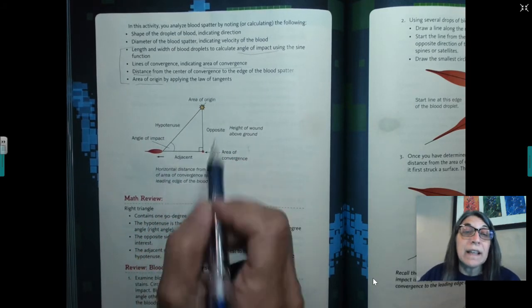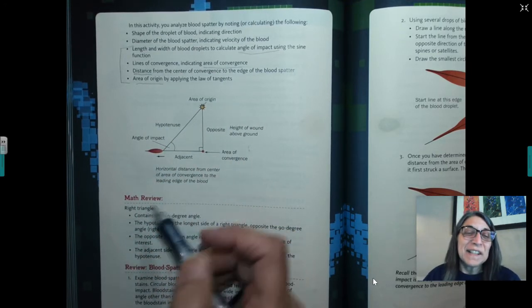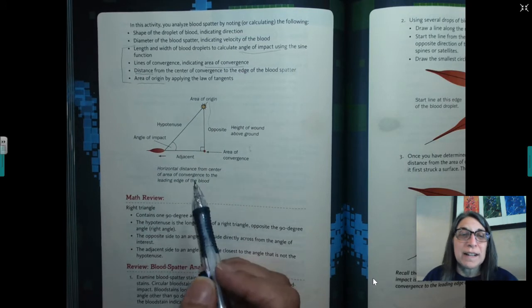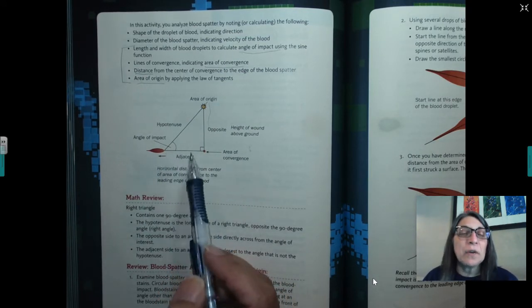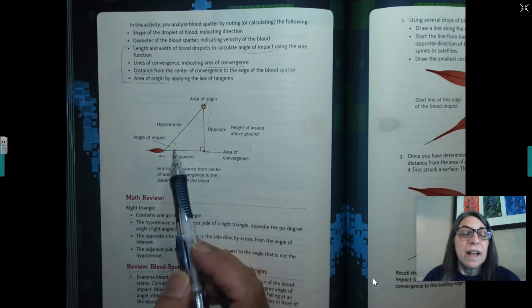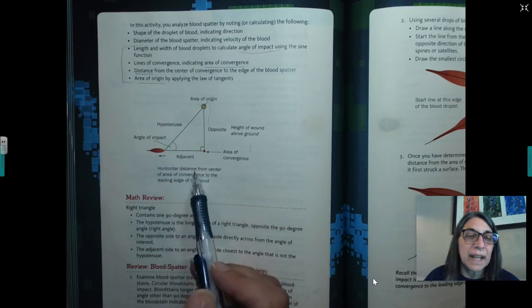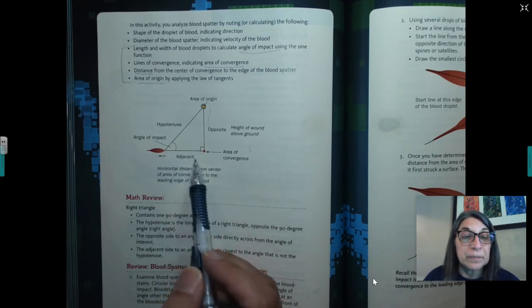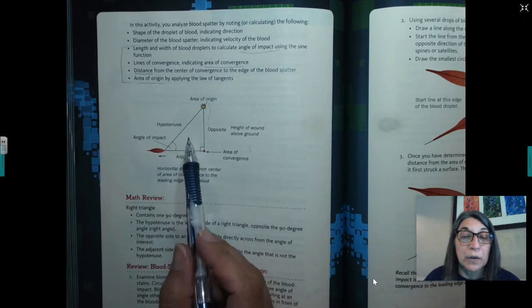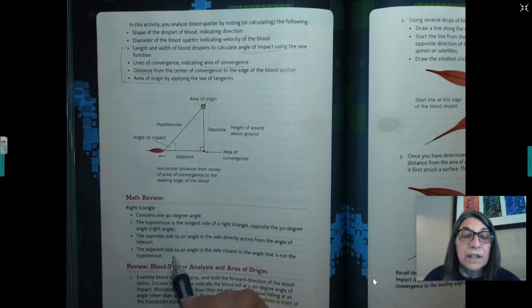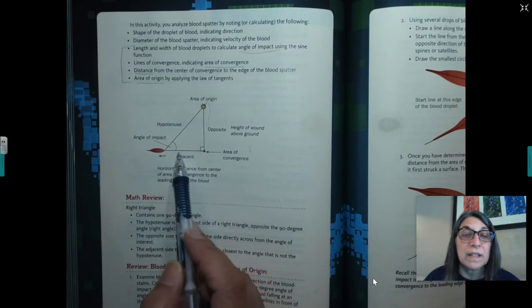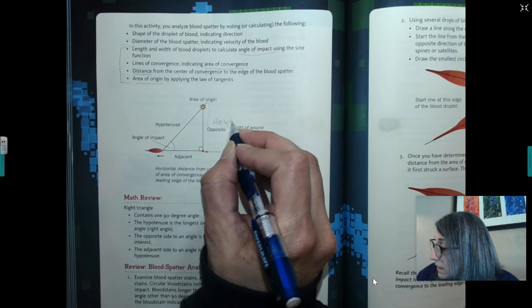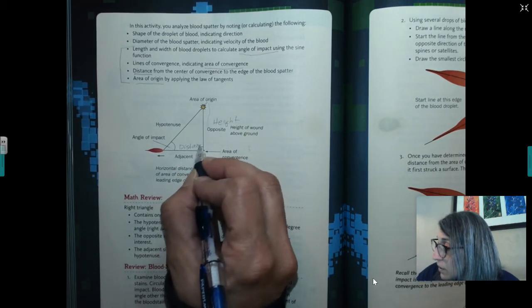And then the area of origin by applying the law of tangents. So basically this is a lot of trig here. A little bit of math review you can read through. It talks about basically when you have a 90 degree angle triangle or right triangle, the longest side across from the 90 degree angle is your hypotenuse. And the adjacent side is closest to the angle that's not the hypotenuse. So this is my adjacent side.